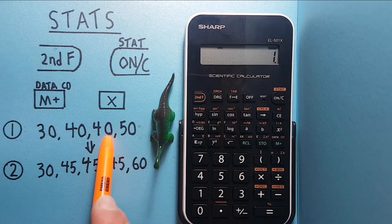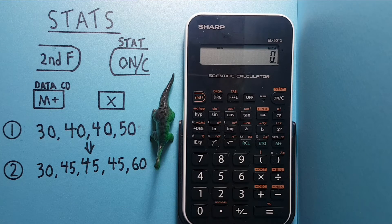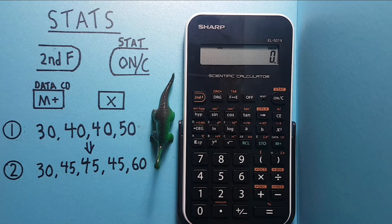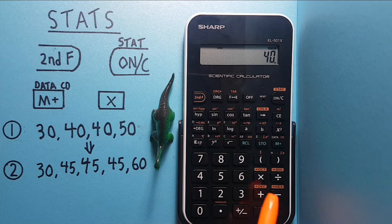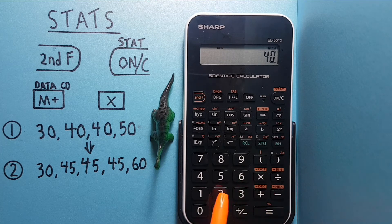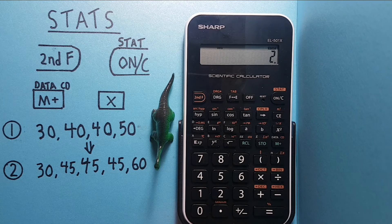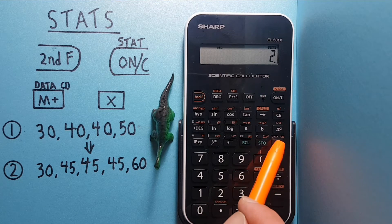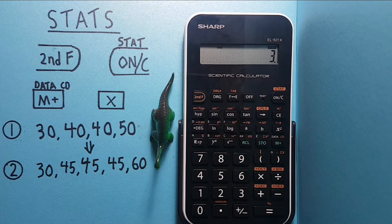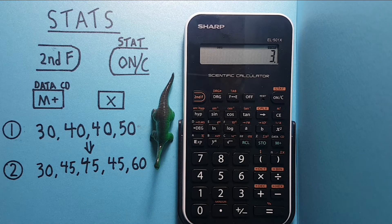Our next two numbers are both 40. If you have multiple of the same number, you can enter it on the stack, then the multiplication key, and the number of times it appears, and then the M plus.